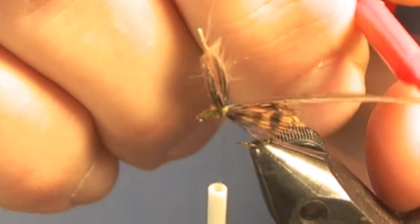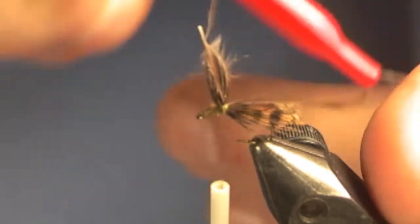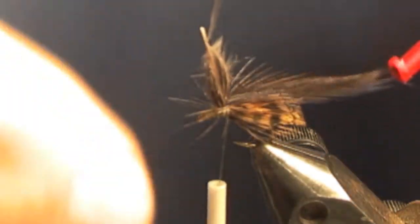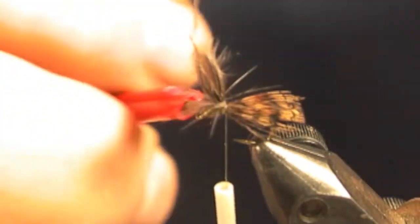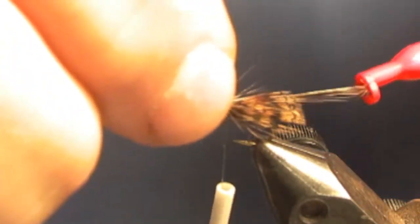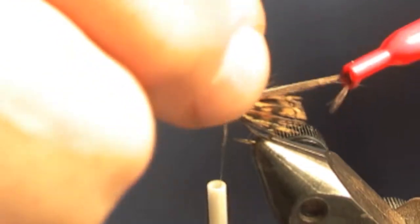Wrap the hackle around this post, and get every wrap under the previous one so that you're pushing up. You can pull up if you need to steady it. Make sure you go over the wing but under the front.